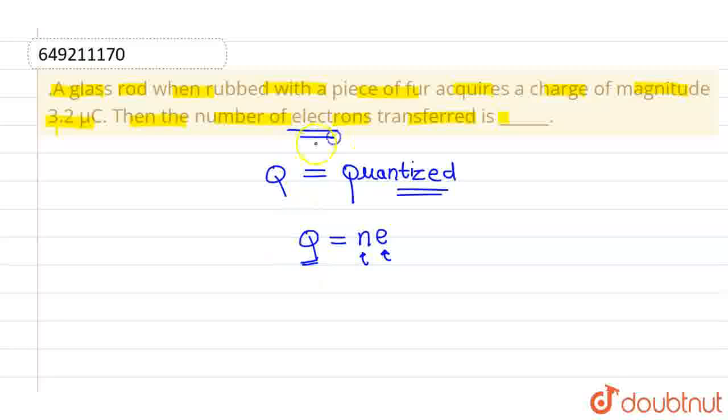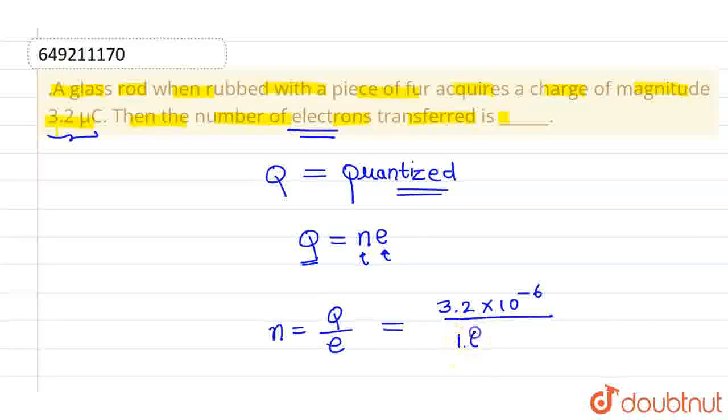To find the number of electrons, n equals charge divided by electron charge. The charge transferred here is 3.2 microcoulomb, which is 3.2 times 10 to the power minus 6 coulombs, divided by the charge of an electron, which is 1.6 times 10 to the power minus 19.